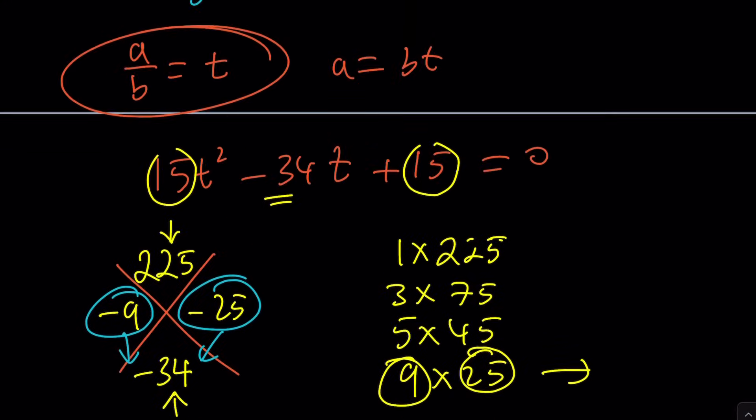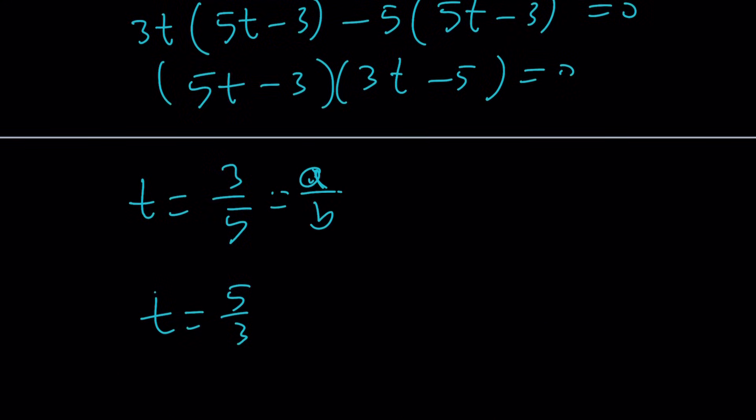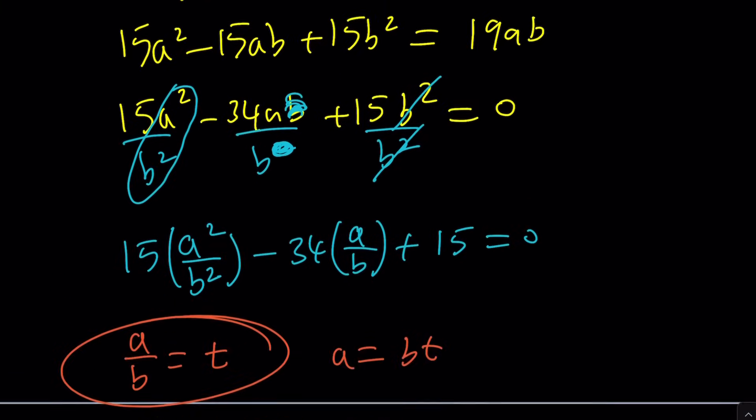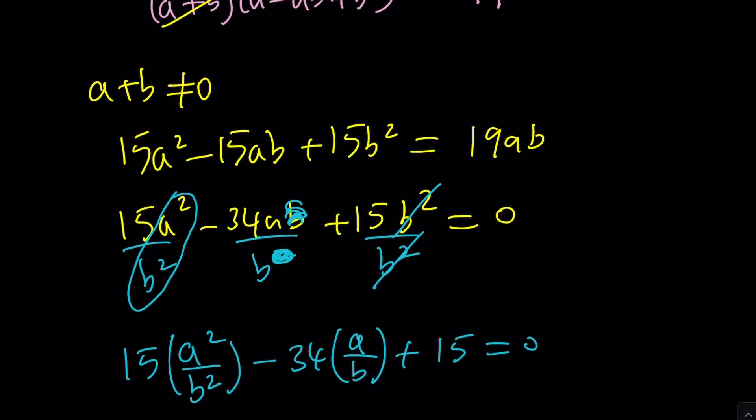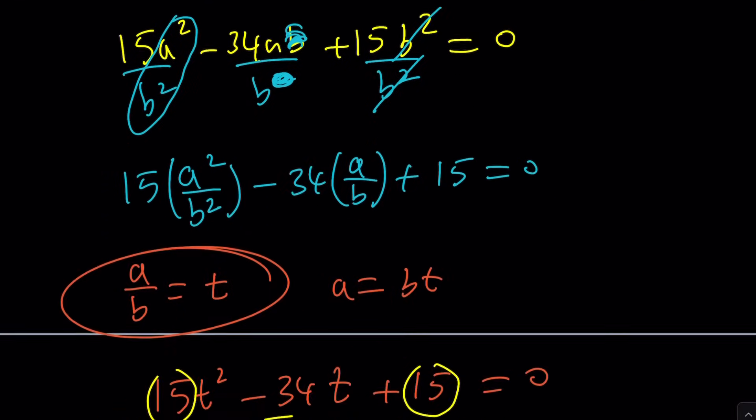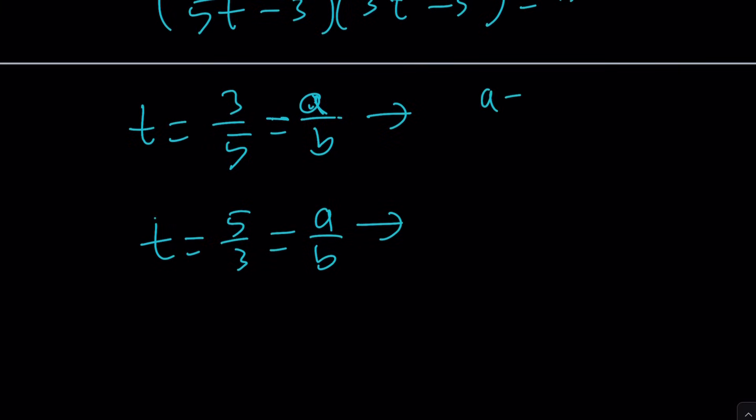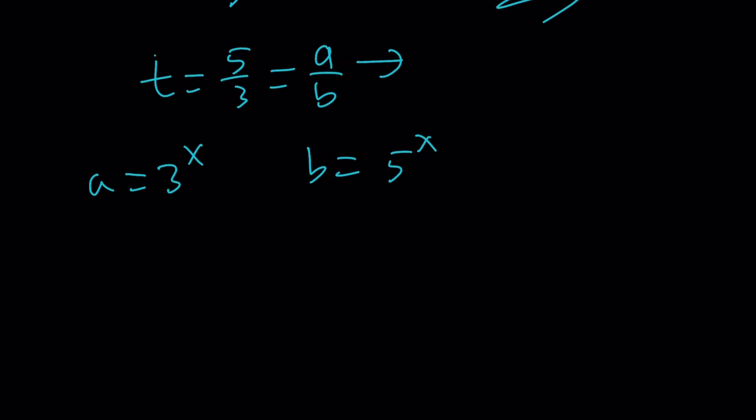But what is t? t is equal to a over b. So we can set it equal to a over b. And this is a over b. So from here we get the ratio of a to b. But how is that going to help us solve this problem for a and b? Because we have a single equation that we kind of need to solve. We need to solve for a and b. But what is a and what is b? Let's think about it. a is 3 to the x and b is 5 to the x. So when I say a over b, when t is equal to 3 over 5, that means a over b is equal to 3 over 5, which is 3 to the x over 5 to the x.